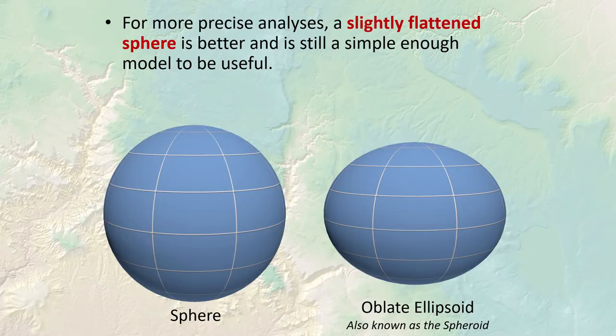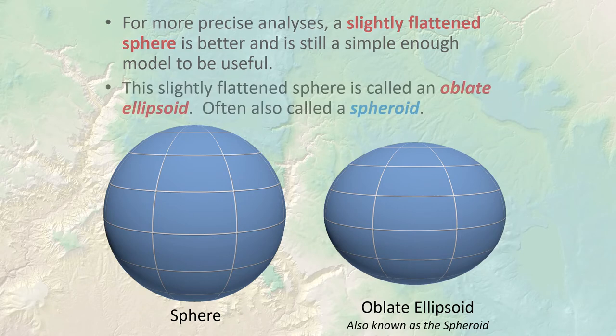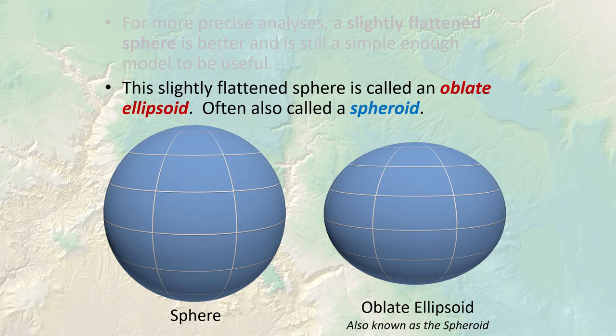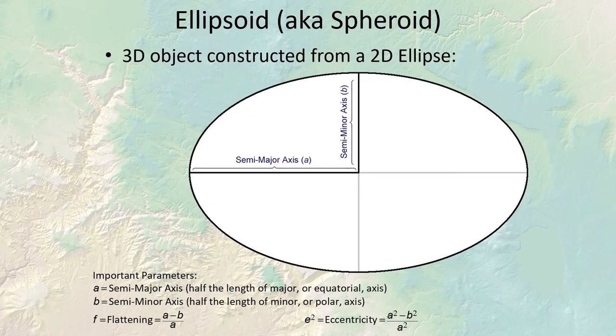To improve precision, we usually use a slightly flattened sphere, which is more precise and accurate than a simple sphere. This is called an oblate ellipsoid — in GIS we also call it a spheroid, and in GIS these terms are interchangeable. Note that the math department knows the term oblate ellipsoid but not necessarily spheroid, so be aware they mean the same thing.